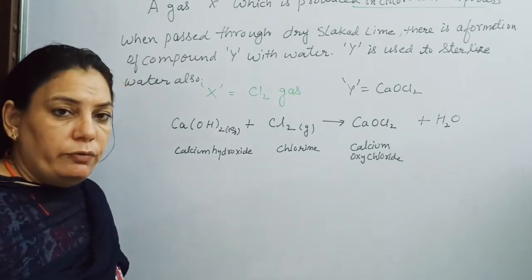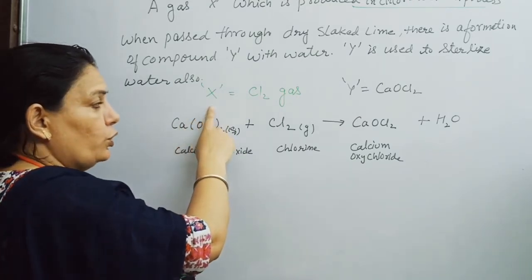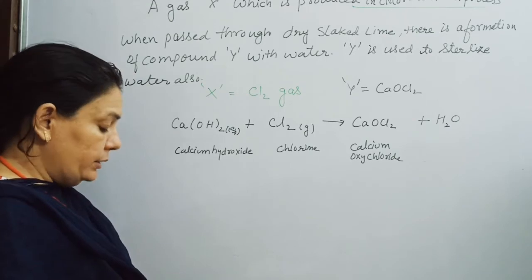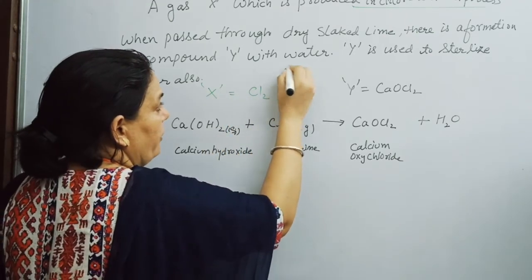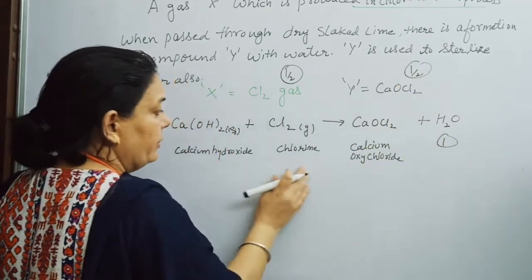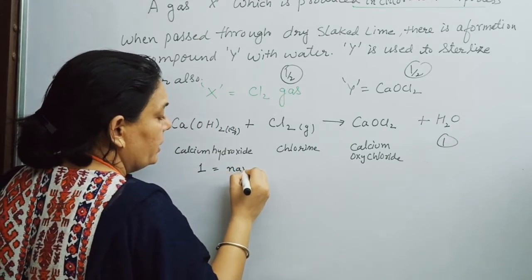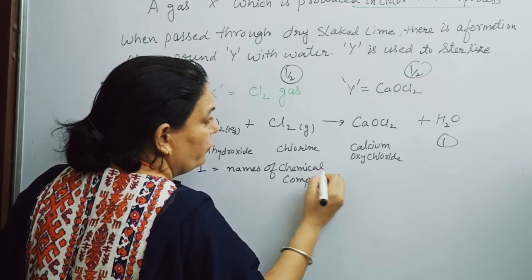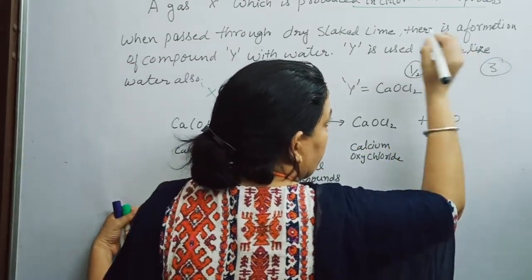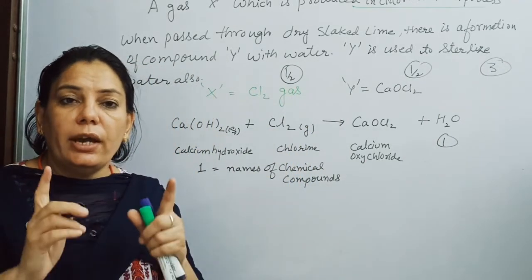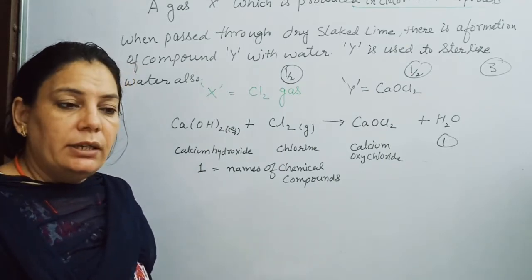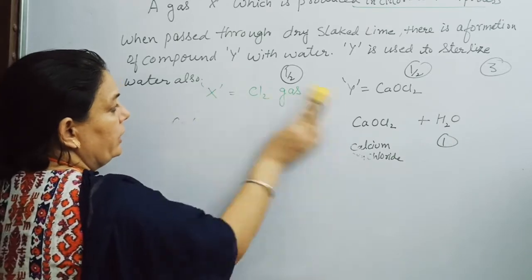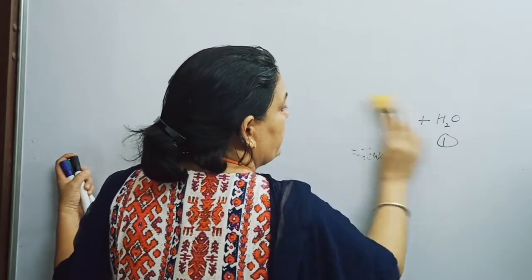The weightage of this question is 3 marks total — one mark for identifying X, one mark for the balanced reaction, and half to one mark for naming the chemical compounds. In these questions, write the answer for each and every point separately. So X is chlorine gas and Y is Bleaching Powder, Calcium Oxychloride. Now let us discuss another salt — Plaster of Paris.